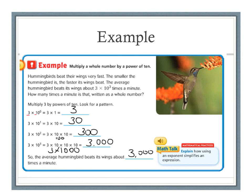My exponent here is 0, so I have 0 zeros in my product. Here, I would do 3 times 1 is 3. My exponent here is 1, so I would have 1 zero in my product.